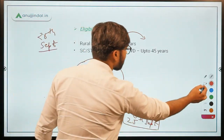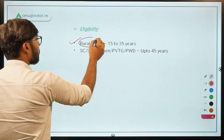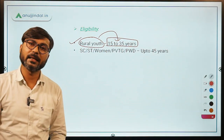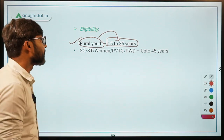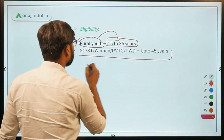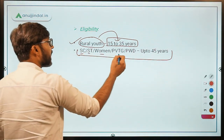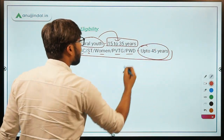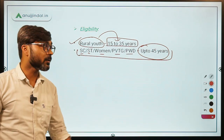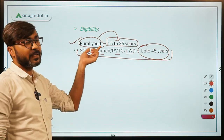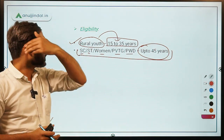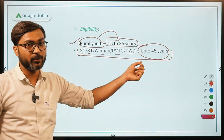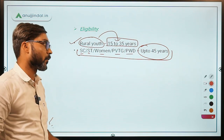Regarding eligibility, rural youth of the age group 15 to 35 years are covered. Obviously for rural youth the age group is 15 to 35, but one important point to remember: if the rural youth is from SC, ST, is a woman, belongs to PVTG (Particularly Vulnerable Tribal Group), or is a Person with Disability, then the age limit is extended up to 45 years.